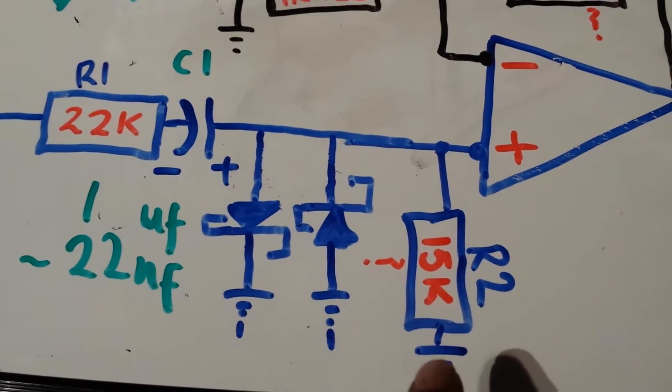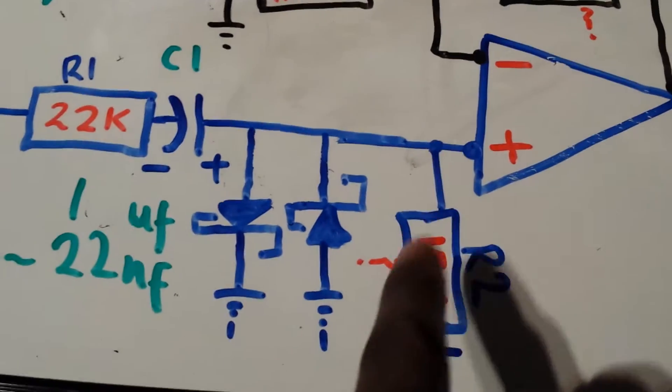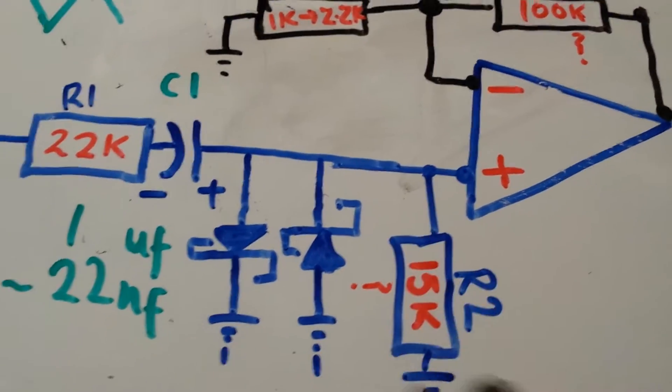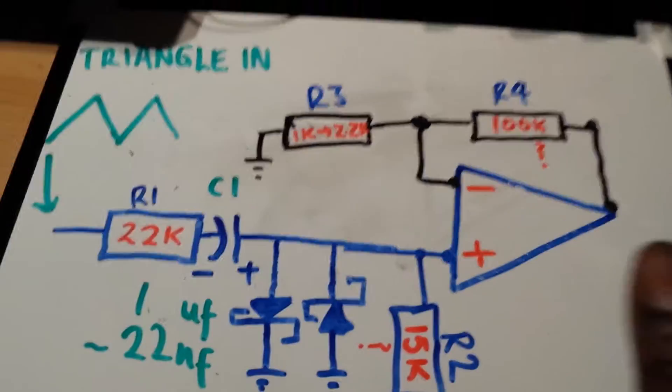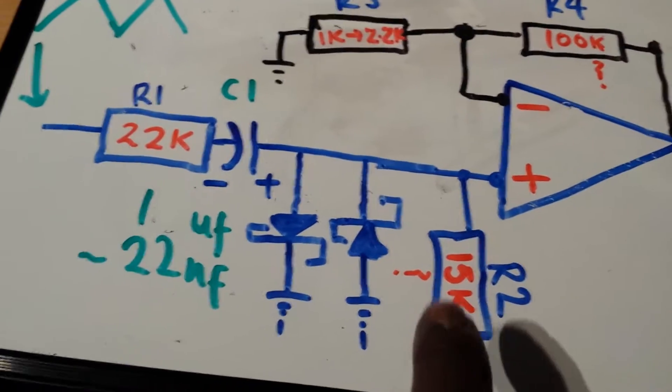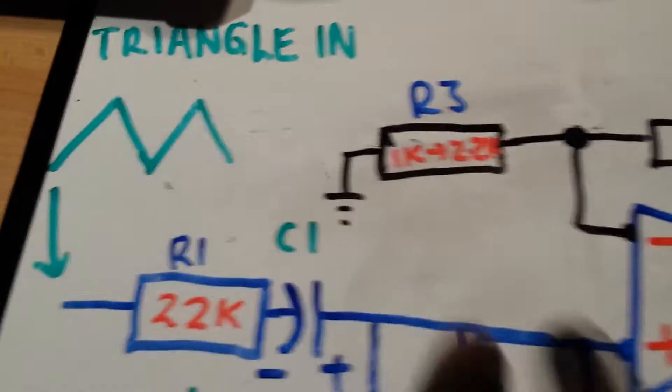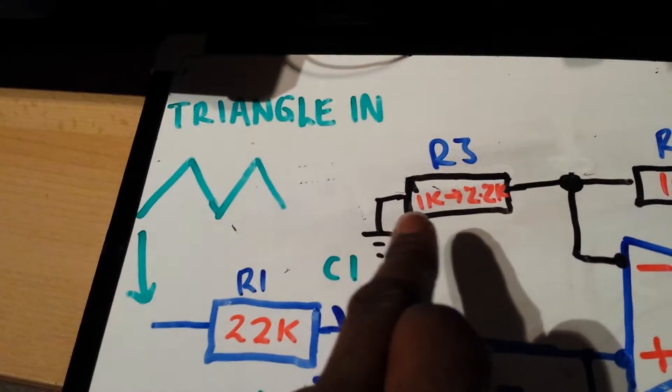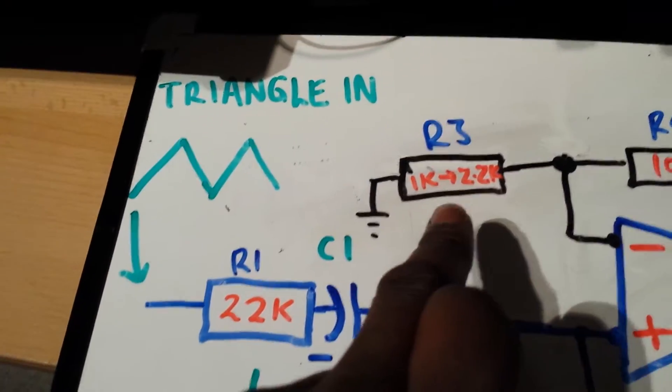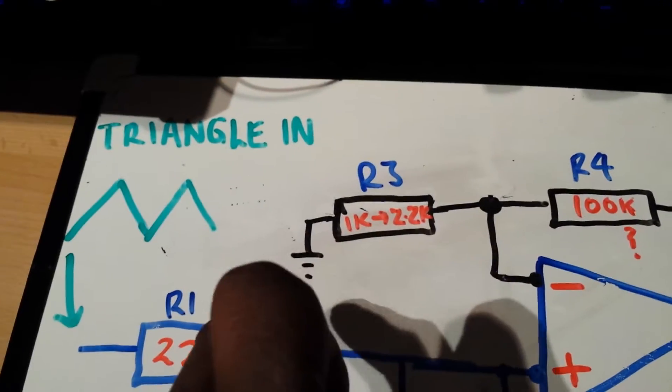And what I hadn't included on the last schematic which I showed was the pull, I think they refer to this as a pull down resistor. So we need to add one of these in here which goes to ground and this value here can be anything but I used 1.5k here for R3 to earth.